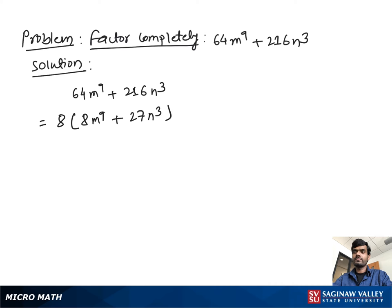Now we focus on the term between the parentheses. We can write the term between parentheses in cube form, so we write (2m^3)^3 + (3n)^3.